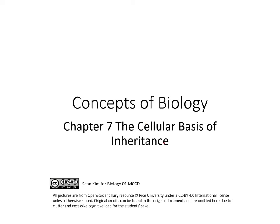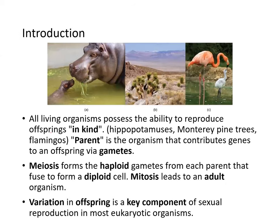Today we'll be going over Chapter 7, The Cellular Basis for the Inheritance. All organisms possess the ability to reproduce offspring in kind — there's a hippopotamus, Monterey pine trees, and a flamingo with a baby flamingo.